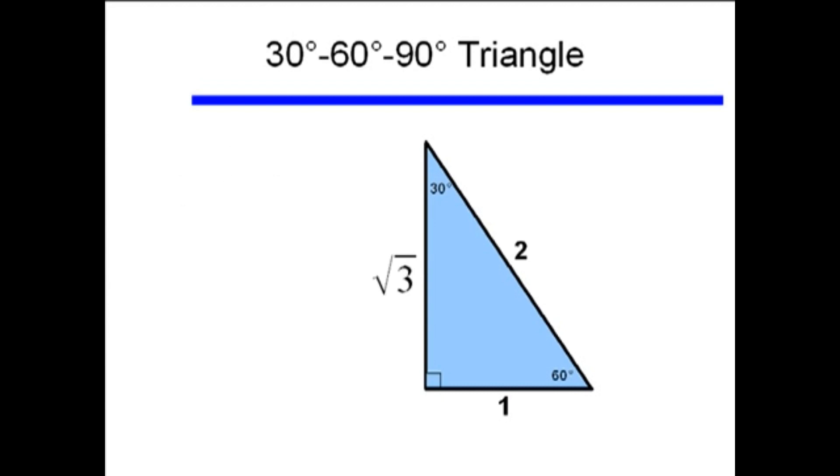And here we have our 30-60-90 triangle. This is another one that will be useful to memorize. Notice that the shortest leg, 1, is opposite the smallest angle, 30 degrees. 2 is the hypotenuse, and the other leg is square root of 3, or approximately equal to 1.732. Even though it looks like 3 is bigger than the 2, because we have that square root sign, square root of 3 is smaller than 2, so the hypotenuse again is the longest side.